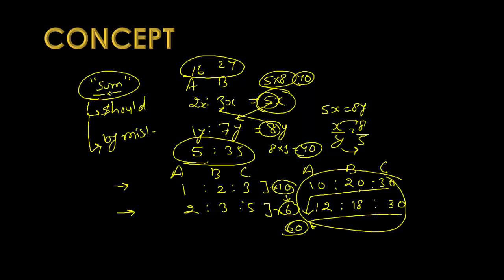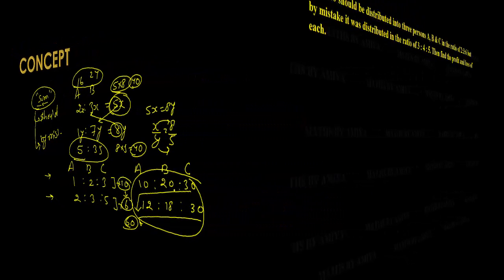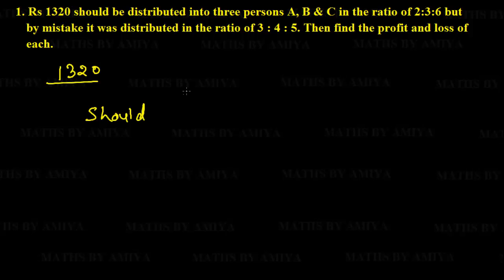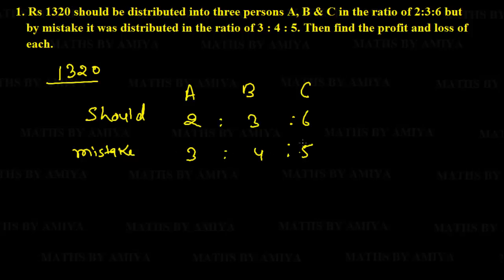Whenever we have a by-mistake ratio distribution problem, we take the summation of should, cross-multiply by the summation of mistake, to get a new merged ratio. Now question number one: Rs. 1320 is to be distributed among three persons A, B, and C in ratio 2:3:6, but by mistake it is distributed in ratio 3:4:5. Find the profit and loss of each person. The total of A+B+C must be the same for both. The should sum is 2+3+6=11, the mistake sum is 3+4+5=12.